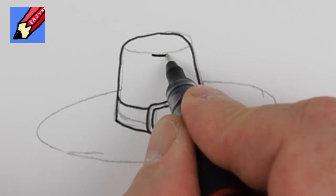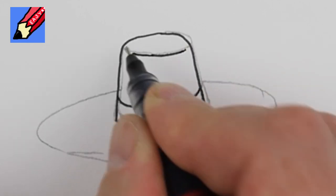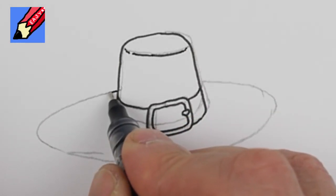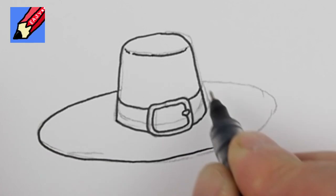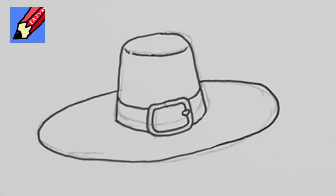And then here you want to maybe not draw it right up to the line so it just kind of fades out into dots. And then bring the brim around like that.